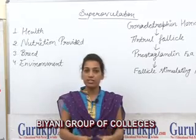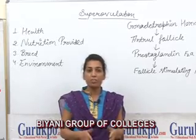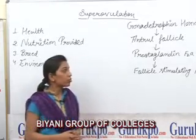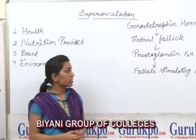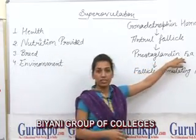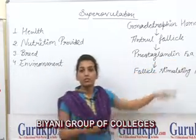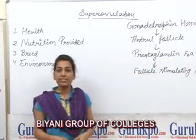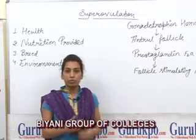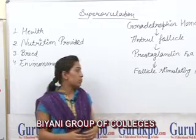a number of ovarian follicles develop and release many eggs. The female to be superovulated is injected with prostaglandin F2A hormone so that synchronized estrus cycles could be developed in them.